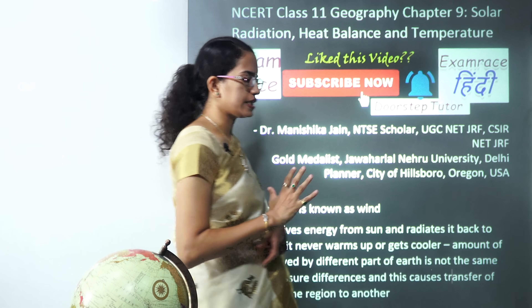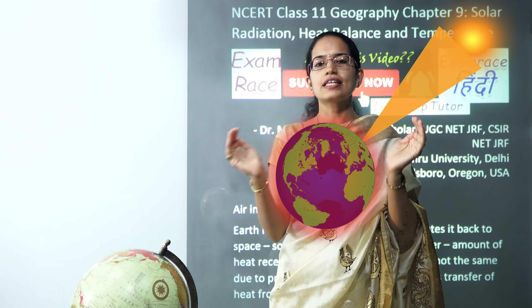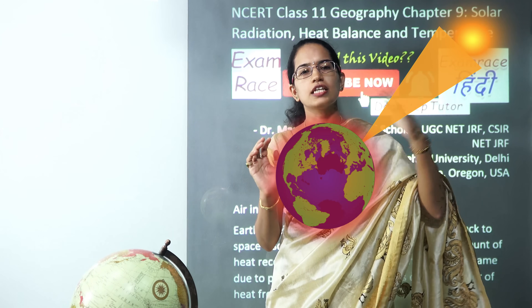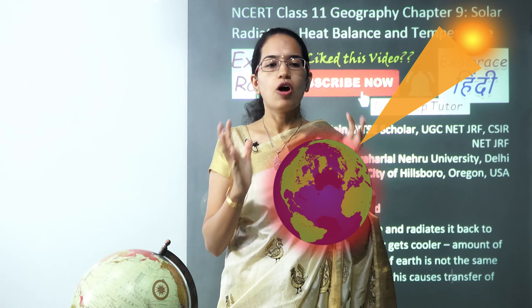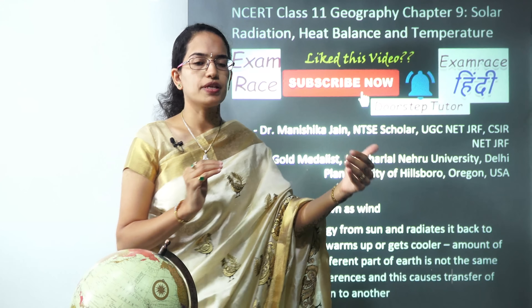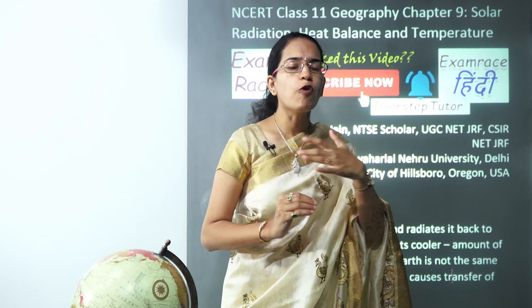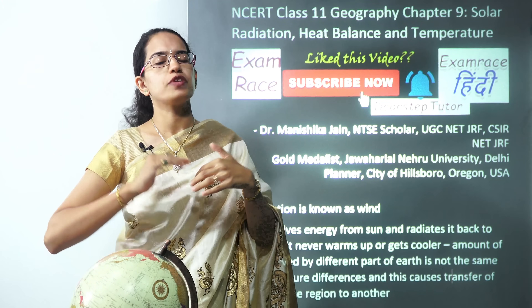Let's start with a very simple concept. If the energy keeps coming in from the sun, the earth would boil or basically blast off, becoming a hot ball of fire. But this actually does not happen. What happens is if there is heat coming in from the sun, in some form it is dissipated out. Today we will understand this process — how the heat comes in and the amount of heat that goes out.